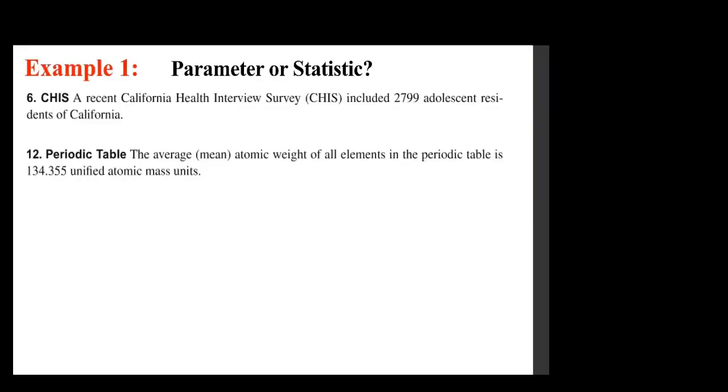CHIS, a recent California Health Interview Survey, included 2,799 adolescent residents of California. Periodic Table: the average mean atomic weight of all elements in the periodic table is 134.355 unified atomic mass units. So what do you think? Which one is which?